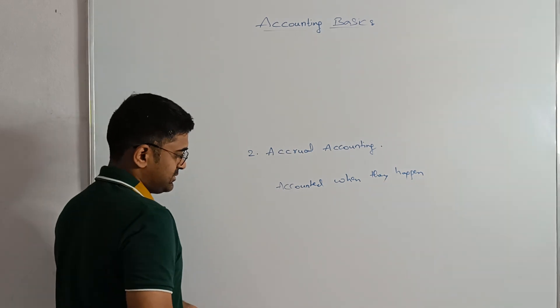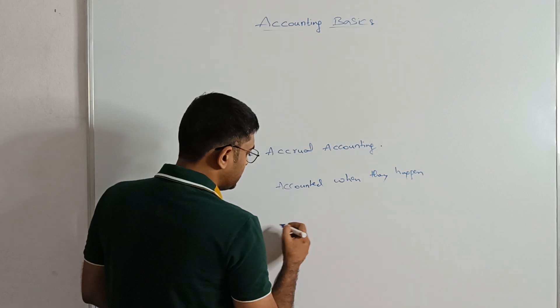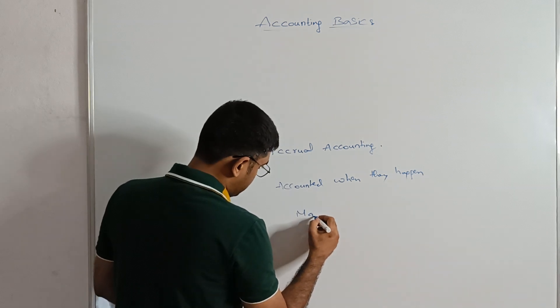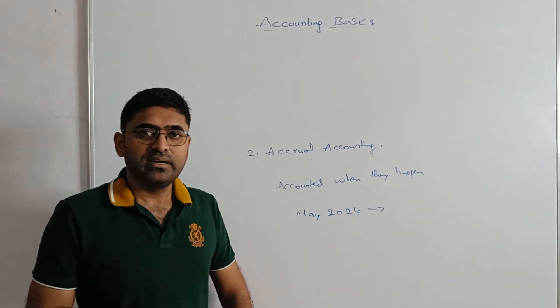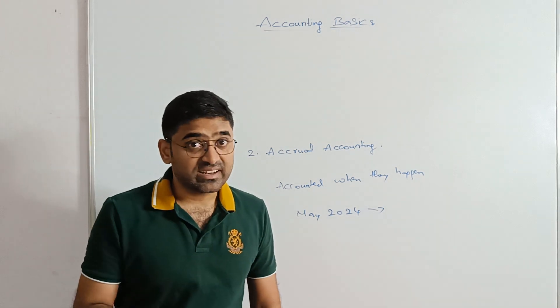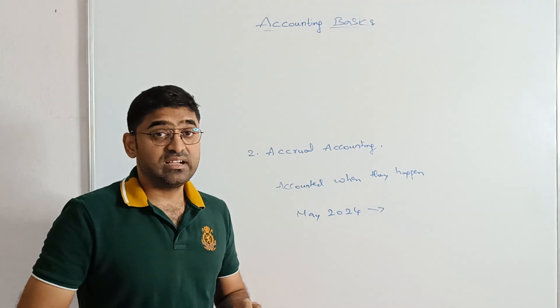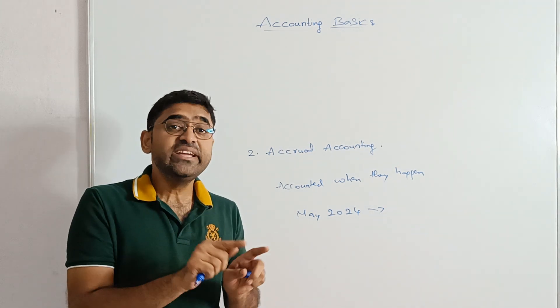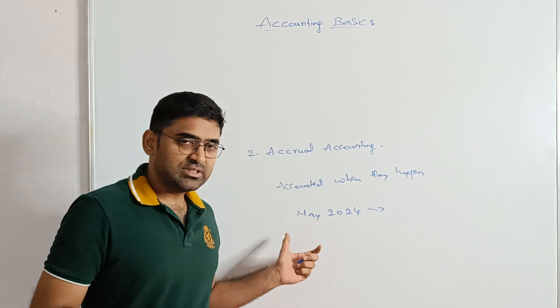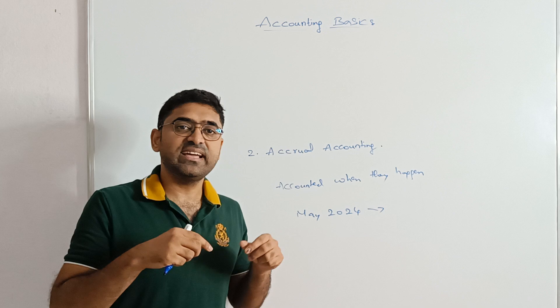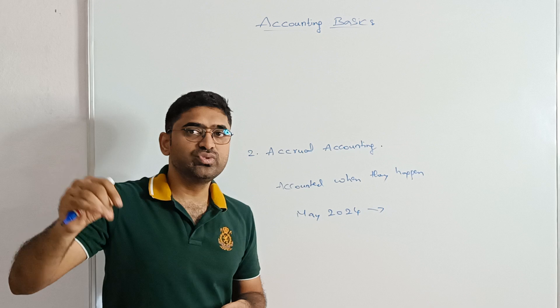For example, I will say I am staying in this apartment on rent. This is May, right? So May 2024, I stayed in this apartment. At the end of the month, I am supposed to pay the rent. Whether I pay the rent or not is not relevant. I stayed in this month. I used the premises. So I am liable to pay the rent. So in the books of account, I will consider it as an expense in May month itself. Even though I may pay the rent in June or even July.